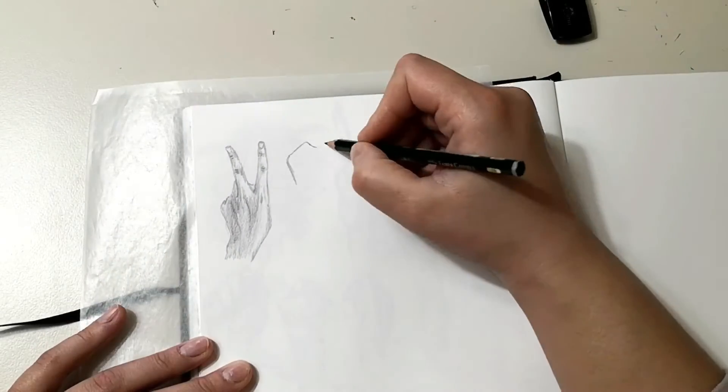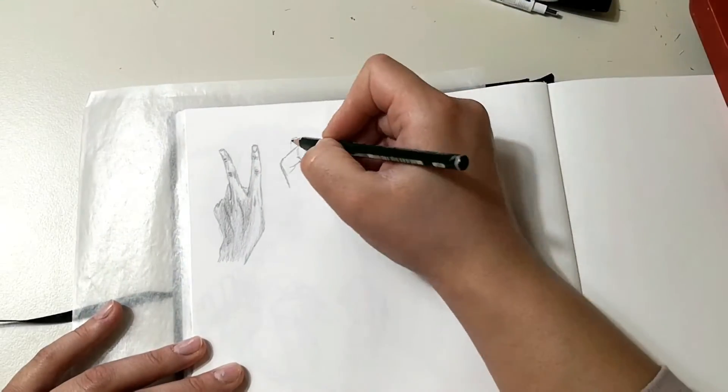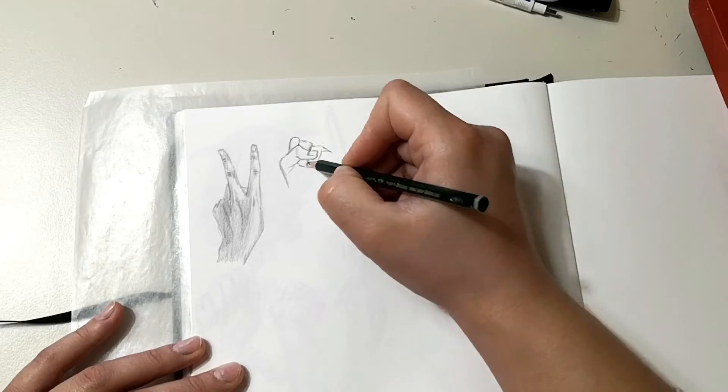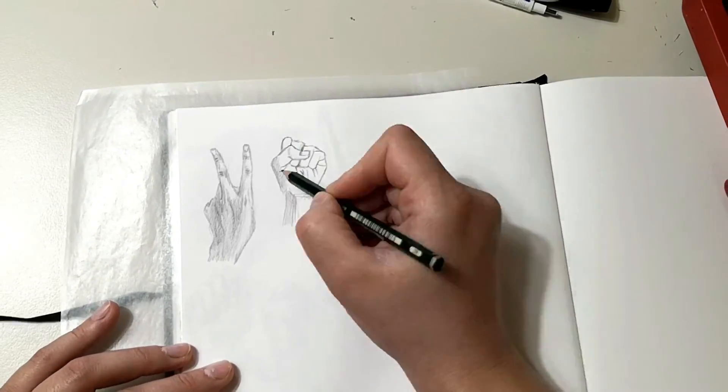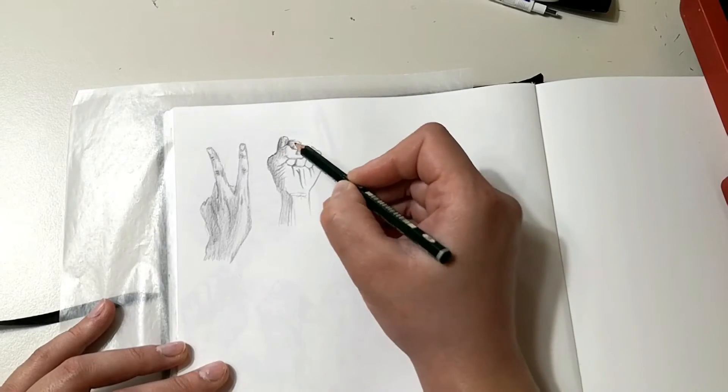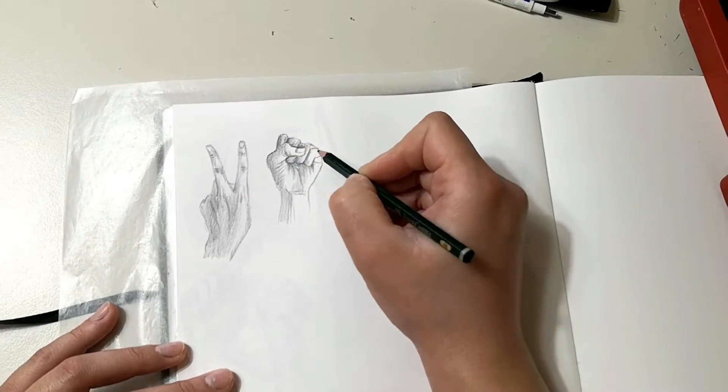When I do start sketching something, even if it is for a preparation for a painting but especially when it's just something that I want to practice, I try to set a goal for myself. I want to have something in my mind, my intention in mind, what I want to accomplish with sketching and with practicing.